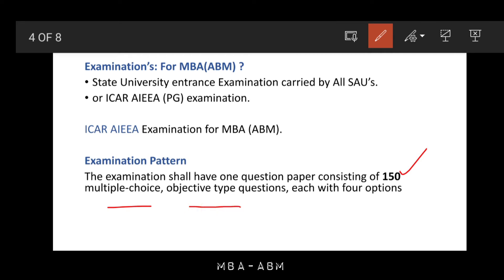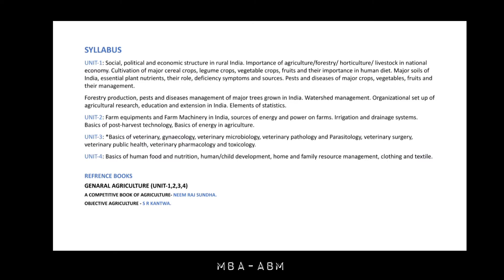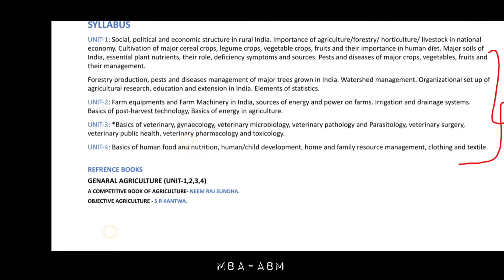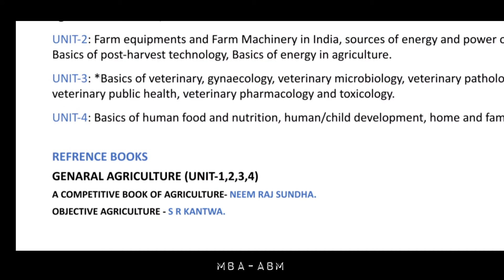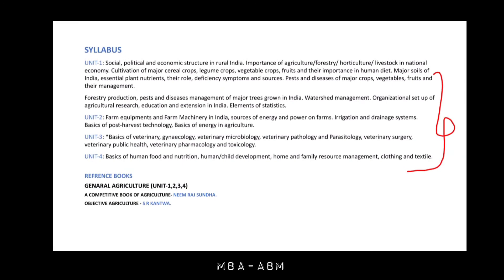The questions are of J2 type, each with four options. The syllabus covers units 1 to 4, with content mainly from general agriculture topics. These topics are covered in books — you can screenshot them. Recommended books include a competitive book of agriculture and Objective Agriculture by S.R.C. Hunter.